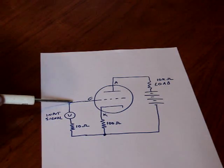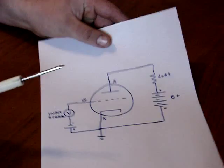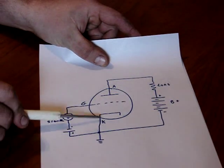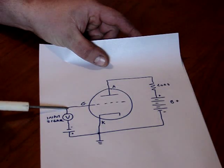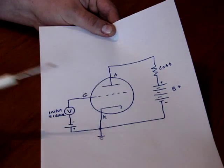Therefore, the grid is more negative than the cathode. The same as it is in this diagram. The cathode is ground. The battery makes the grid more negative than ground. More negative than the cathode.